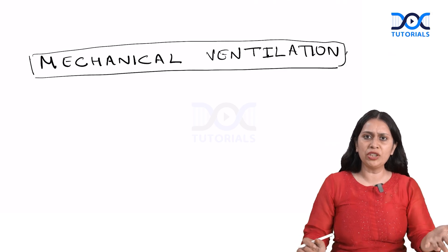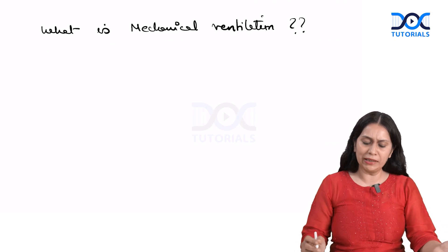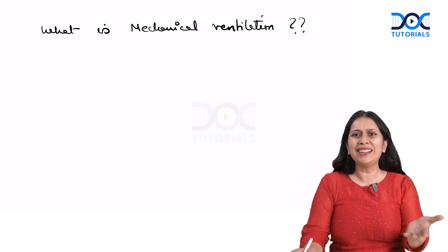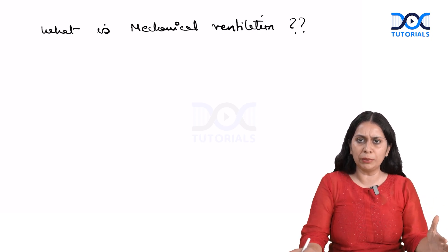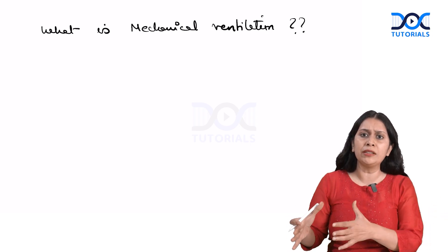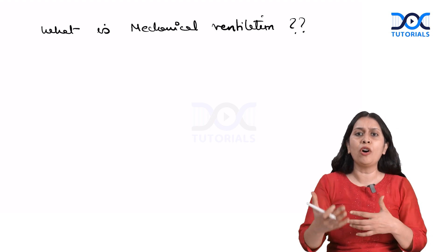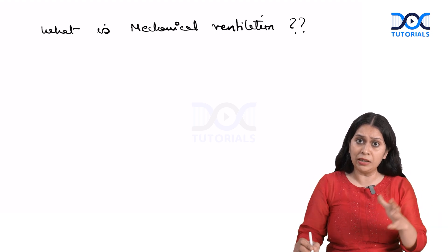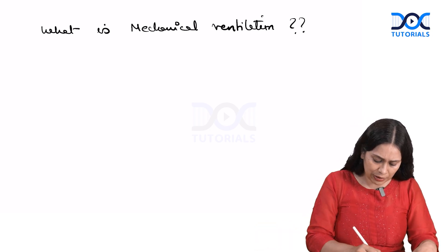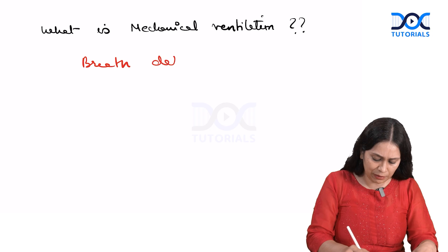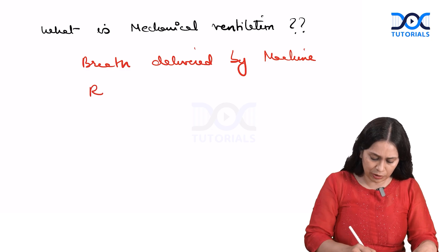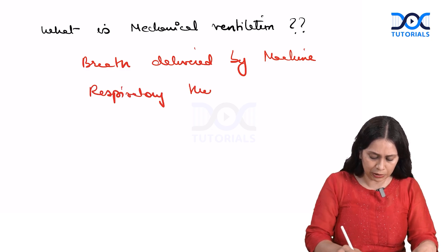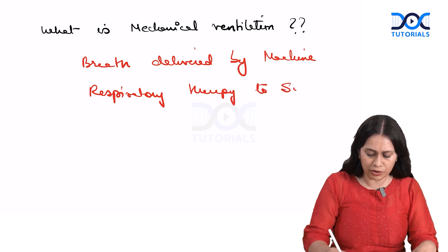Let us revise the questions asked on mechanical ventilation. Mechanical ventilation is the breath delivered by a machine — the ventilator. It is a respiratory therapy given to support the oxygenation and ventilation of the patient when, due to a primary disease condition, these functions are affected. So while we treat the primary disease, support of ventilation and oxygenation is provided with mechanical ventilation. It is a temporary respiratory therapy.